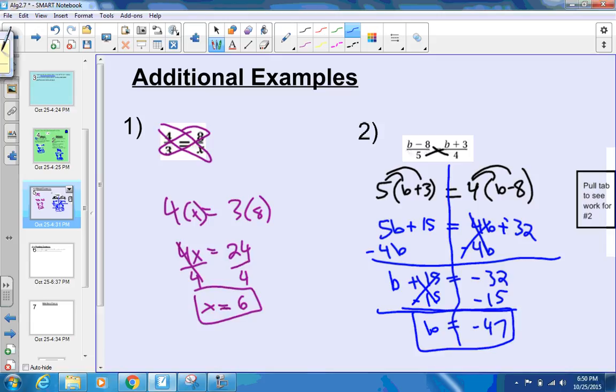Now, you really should plug it back in there to check. Let's do that. Negative 47 minus 8 would be negative 55 over 5. And that would be equal to negative 47 plus 3 would be negative 44 over 4. Both sides are going to be equal to negative 11. This is our checking here. And that makes us happy. So b really is negative 47 for this one. There will be some where there are multi-steps like this where you have to still do the cross-multiplying. It just turns into some distributing and solving for b.